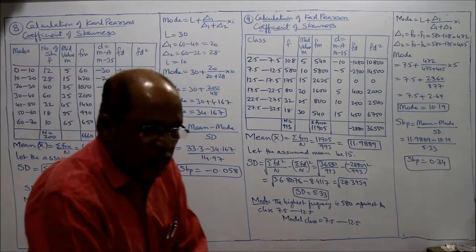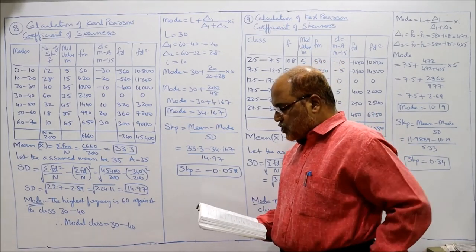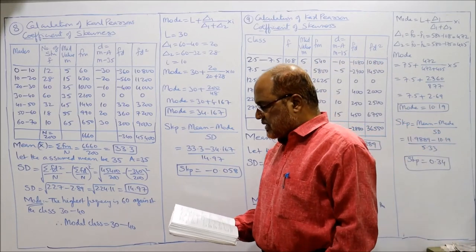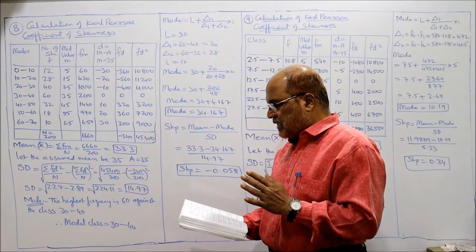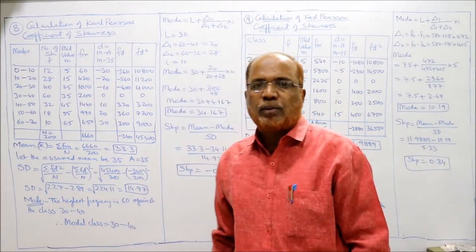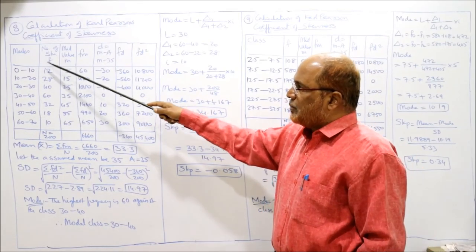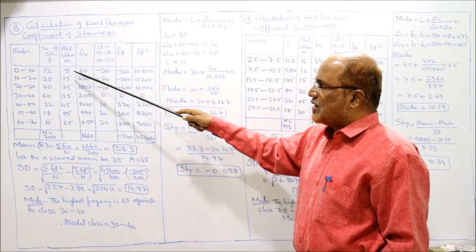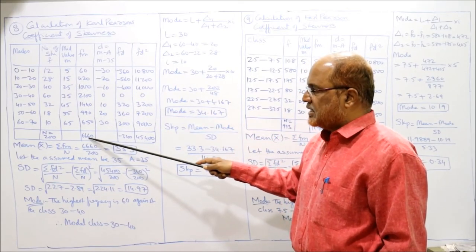Problem number 8: Compute Karl Pearson's coefficient of skewness. Marks: 0 to 10, 10 to 20, 20 to 30, up to 60 to 70. Number of students (frequencies): 12, 28, 40, 60, 32, 18, 10. Total n = 200. Mid values are 5, 15, 25, etc. Multiplying f×m, total Σfm = 6660.